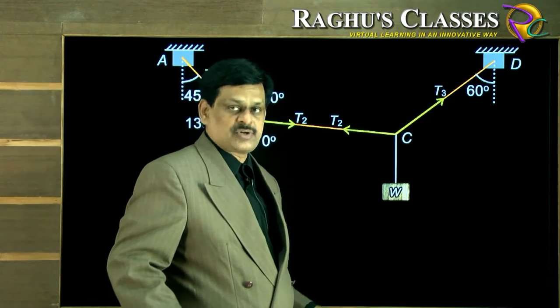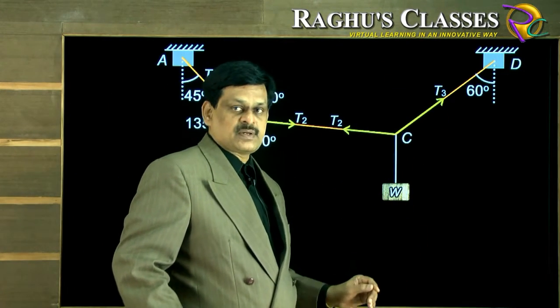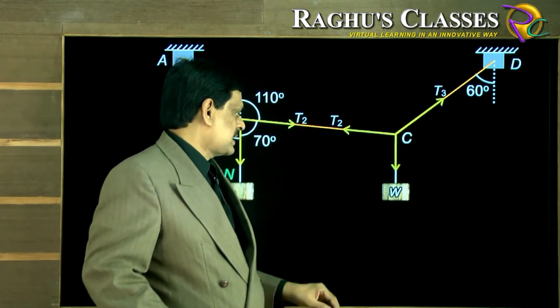Let the tension in the other wire is T3, which is a pull towards D from C to D, and the weight is unknown, that is W.